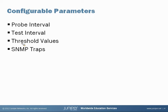Within the test, probes are sent at regular intervals configured in seconds. When the total number of probes have been sent and the corresponding responses received, the test is complete. You can manually set the probe interval for each test to control how the RPM test is conducted. After all the probes for a particular test have been sent, the test begins again. The time between tests is defined as the test interval, and you can manually set it to tune RPM performance.